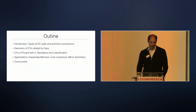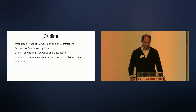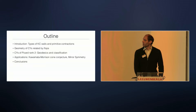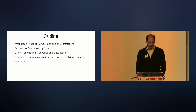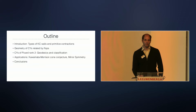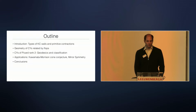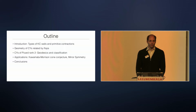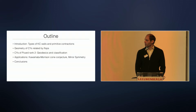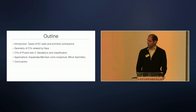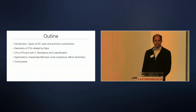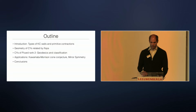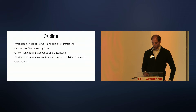I will start with a short introduction about the types of Kähler cone walls you can have — the so-called primitive contractions. Then I will explain how to deal with the geometries of Calabi-Yaus related by flops, and specify to the case of Calabi-Yaus with Picard rank 2 (h11 equals 2), looking at the geodesics and a classification of these manifolds. The last part will be about applications — the Kawamata-Morrison cone conjecture and mirror symmetry — before I conclude.